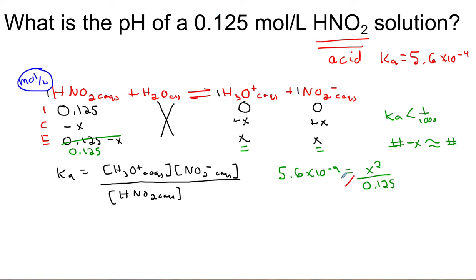Next I will cross multiply. I am going to get X squared equals 0.0007.